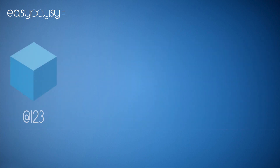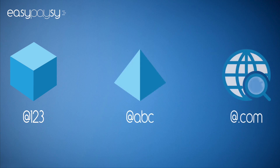They come in three formats: canonical, made up mostly of numbers, just like a regular bank account; mnemonic, very similar to email addresses; and domain, that you can personalize with your own domain name.